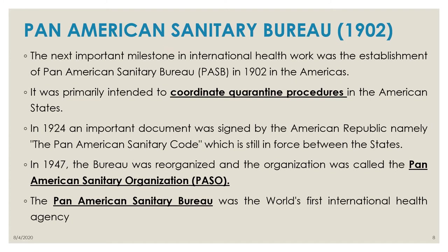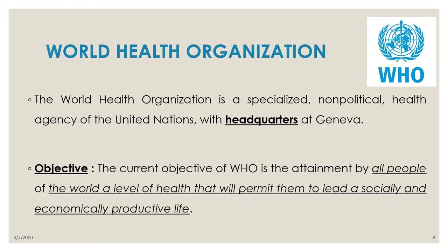The next important milestone in international health work was the establishment of the Pan American Sanitary Bureau in 1902 in America. It was primarily intended to coordinate quarantine procedures in American states. In 1924, an important document — the Pan American Sanitary Code — was signed by American Republics and is still in force. In 1947, the bureau was reorganized and called the Pan American Sanitary Organization. The Pan American Sanitary Bureau was the world's first international health agency.